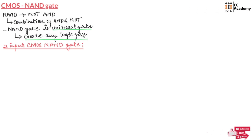Now let us understand how a two-input NAND gate is constructed using CMOS technology. A two-input NAND gate using CMOS technology consists of two important networks.